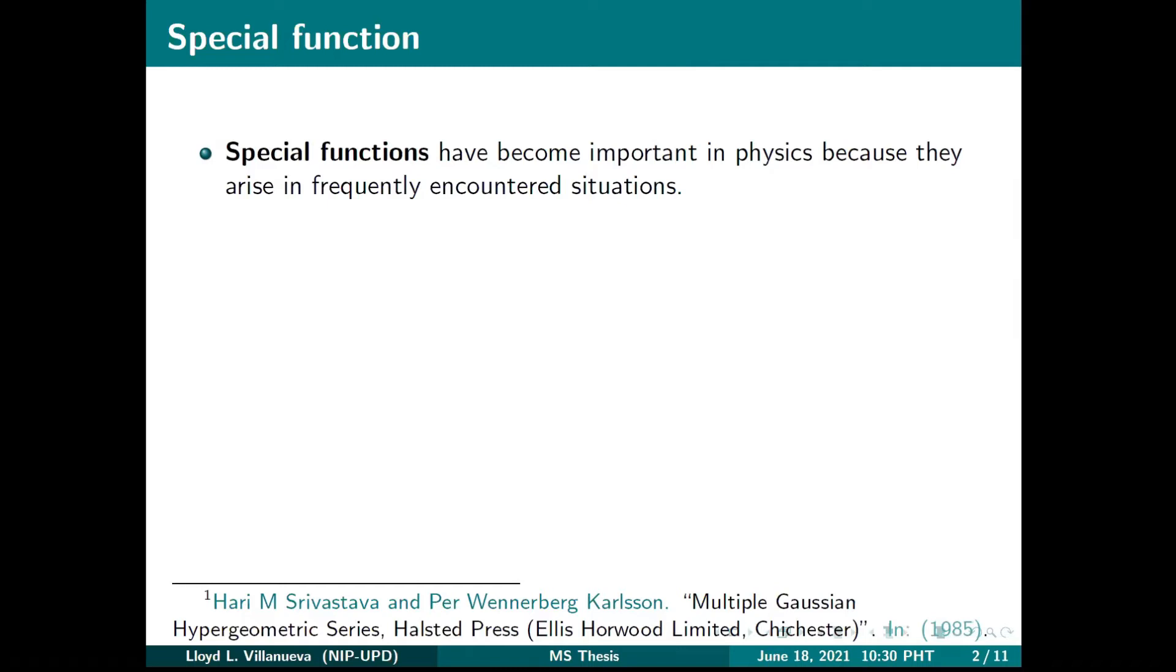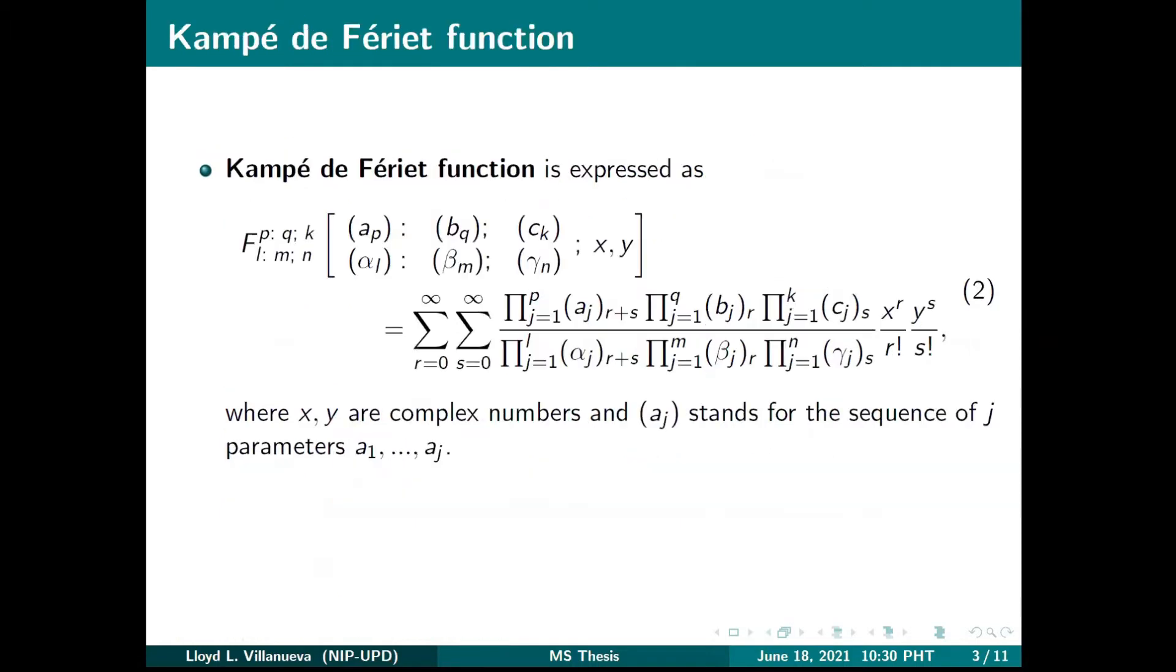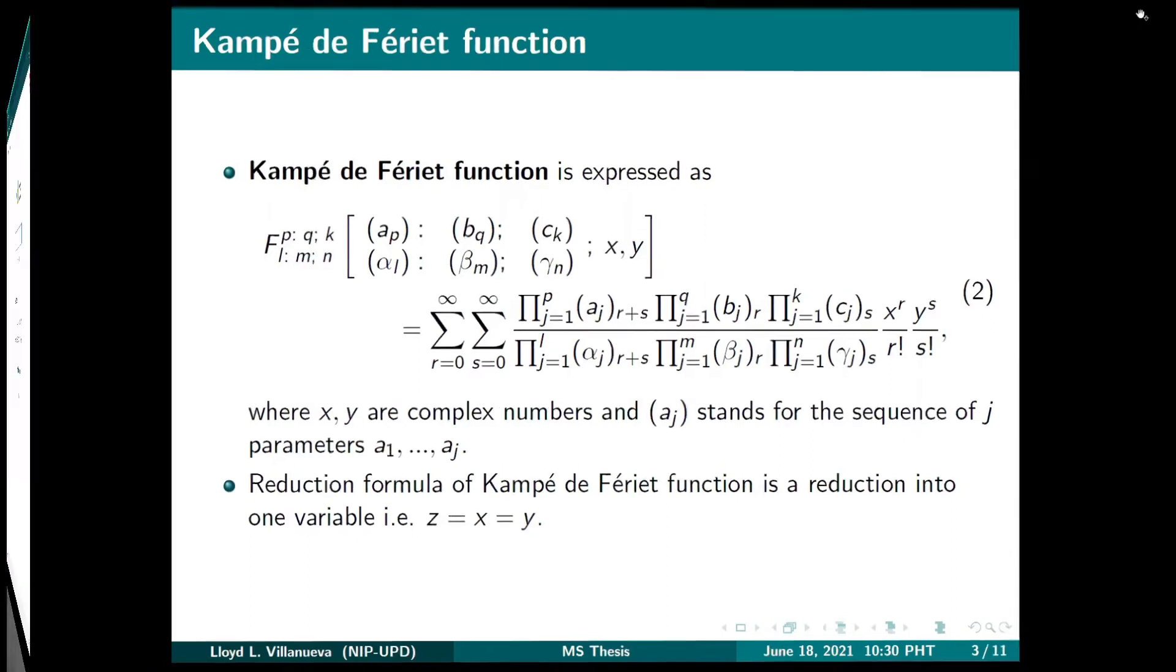One of the most significant special functions is the hypergeometric function. And because of its enormous success, this leads to the development of the Campé de Fériet function. The Campé de Fériet function is a hypergeometric function in two variables. Identifying reduction formulas of the Campé de Fériet function have great value in simplifying solutions.